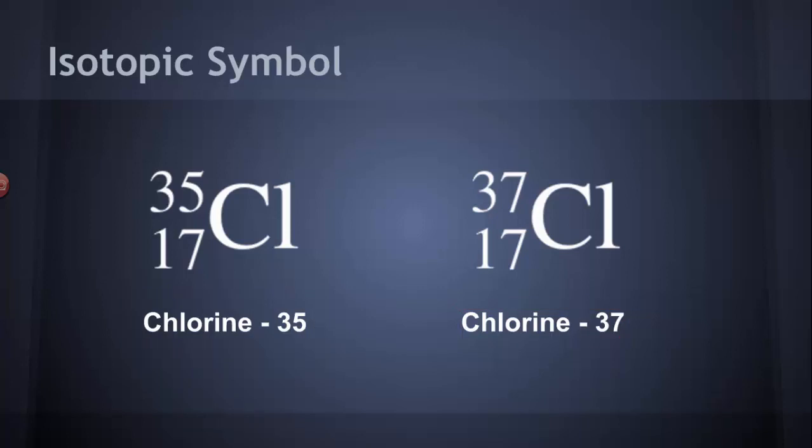The isotopic symbol is nice because it gives us all of the information that we need about what's going on in the nucleus of these isotopes. So I can look and I can do a little subtraction in my head and I can figure out that chlorine-37 has 17 protons, but it also has 20 neutrons, as opposed to the 18 in chlorine-35.